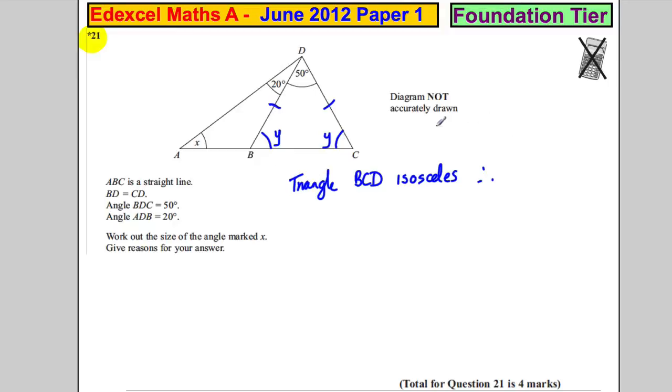We know that y plus y plus 50 must add up to 180, so 2y plus 50 equals 180. Therefore, 2y equals 130, and y equals 65. So this angle here must be 65 degrees, and this angle here must be 65 degrees.